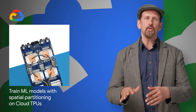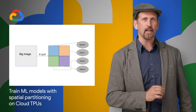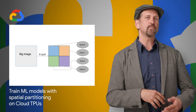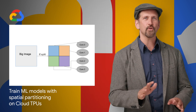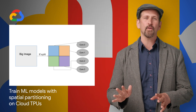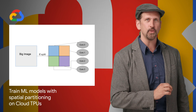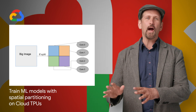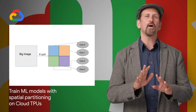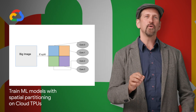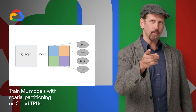Cloud TPUs now provide a spatial partitioning capability that allows you to seamlessly scale your model by leveraging two, four, eight, or even 16 cores for training ML models that wouldn't otherwise fit into the memory on a single TPU core. Our XLA compiler automatically handles the necessary communications among all cores, so no code changes are required. Read more about it on the post.